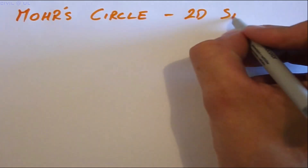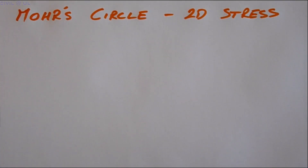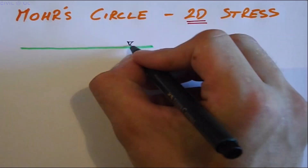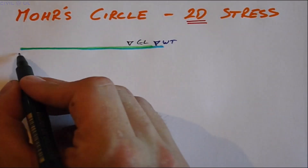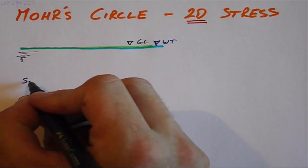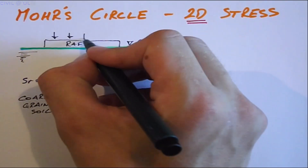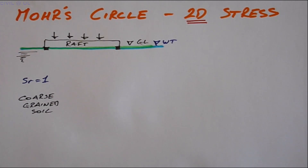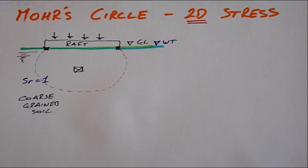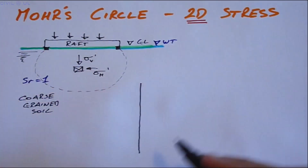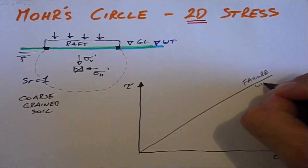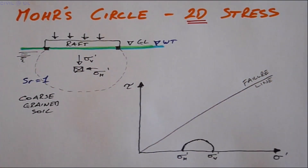We can illustrate this by again calling on Mohr's circle for two-dimensional stress, as many practical problems can be treated by analysis in two dimensions. Imagine we have a submerged coarse-grained material — the soil void space is saturated — and we are going to construct a raft foundation at ground level. Consider a representative element within the bulb of soil influenced by the raft's loading. Before the raft is constructed, the soil element will experience certain vertical and horizontal normal stresses.